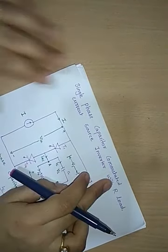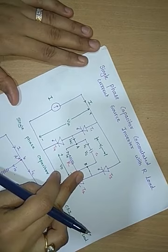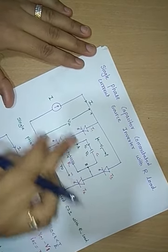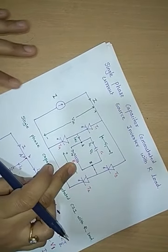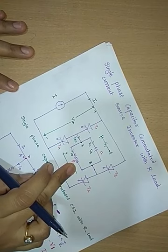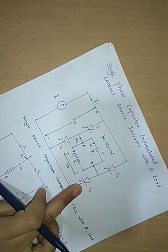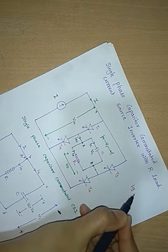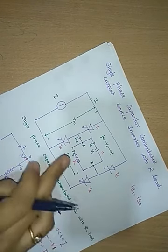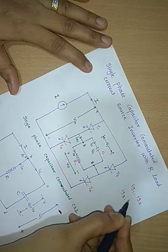Now we are going to see the working of a single-phase capacitor-commutated current source inverter with resistive load. The figure shows the circuit diagram of the single-phase CSI with resistive load. It consists of a constant and adjustable DC current source. The capacitor C is connected in parallel with the resistance R, which is used for storing the charge for force commutation of the SCRs. The thyristors T1 and T2 are triggered simultaneously by using the triggering pulses IG3 and IG4.